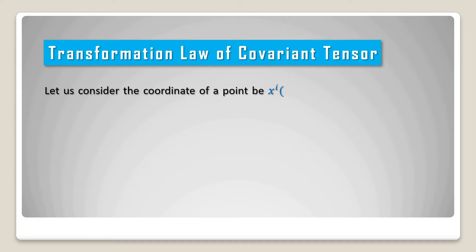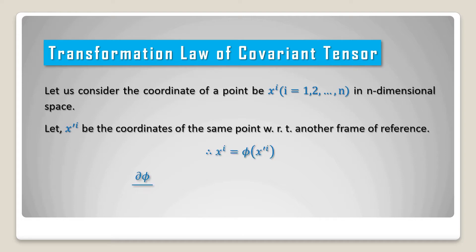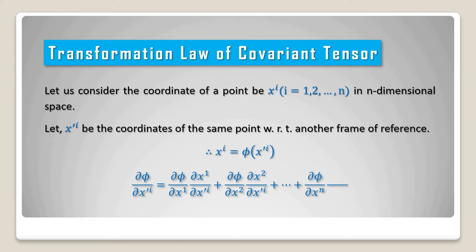Transformation law of covariant tensor. Let us consider the coordinates of a point x upper suffix i, where i goes from 1 to n in n-dimensional space. Let x prime i be the coordinates of the same point with respect to another frame of reference. Therefore we can write del phi equal to phi of x prime upper suffix i.